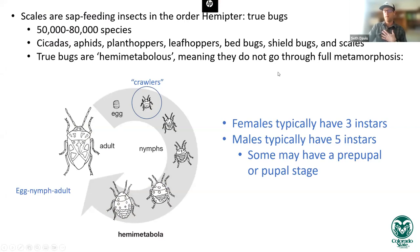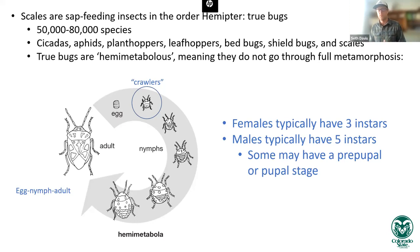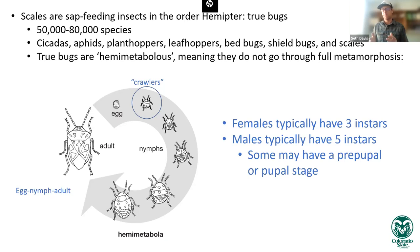A brief recap of the basic life cycle: scales go through a set of nymphal instars. Females typically have three instars from egg to sexual maturity; males typically have five, because for a variety of scale species the males may be the more mobile sex — they can become winged adults and fly away, which takes longer to develop — or they're sessile and feed on the body of the host plant as well.